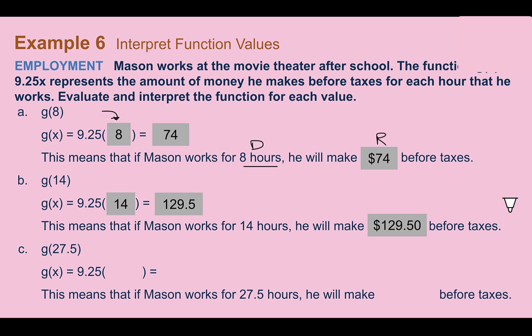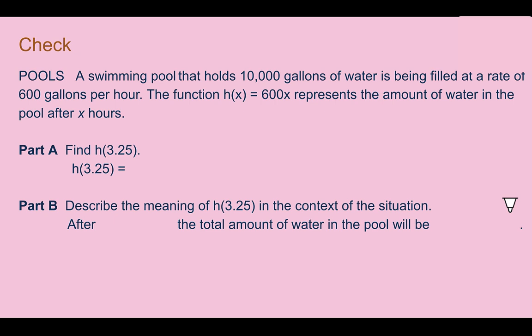If we evaluate g of 27.5, we plug in 27.5 and get 254.375 — so if Mason works 27.5 hours, he makes approximately $254.38.